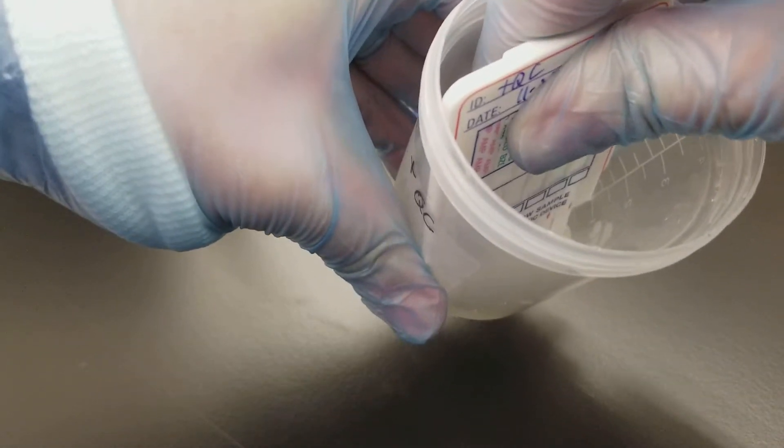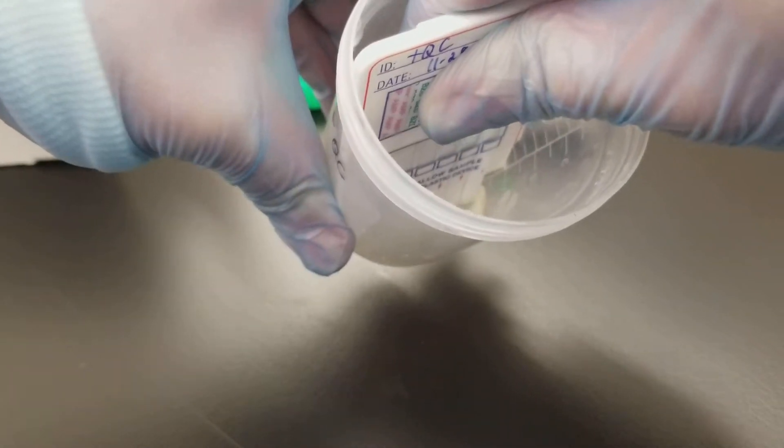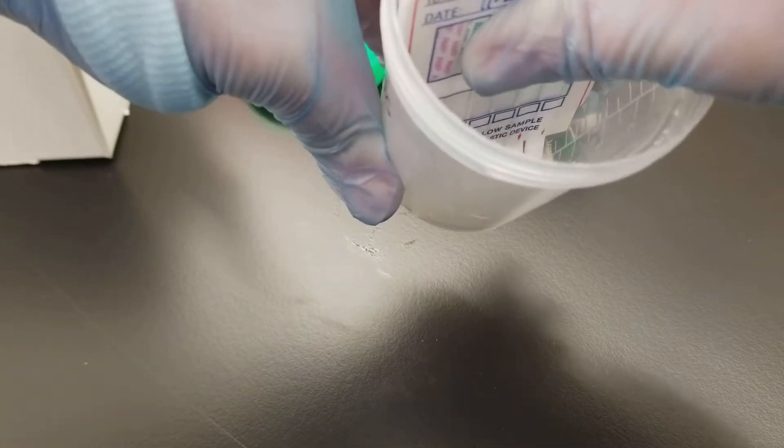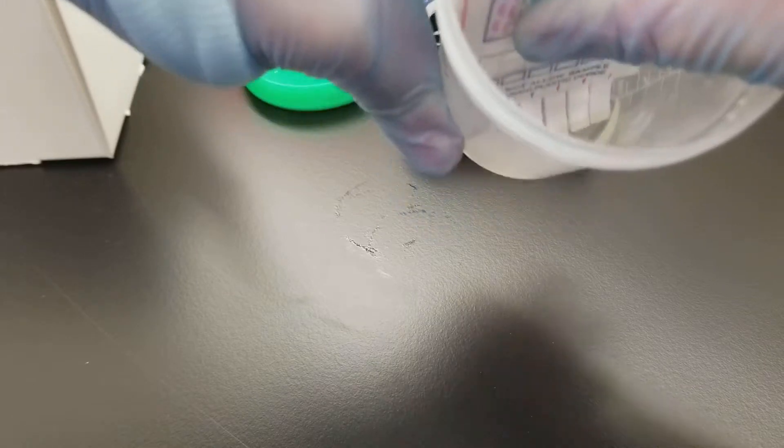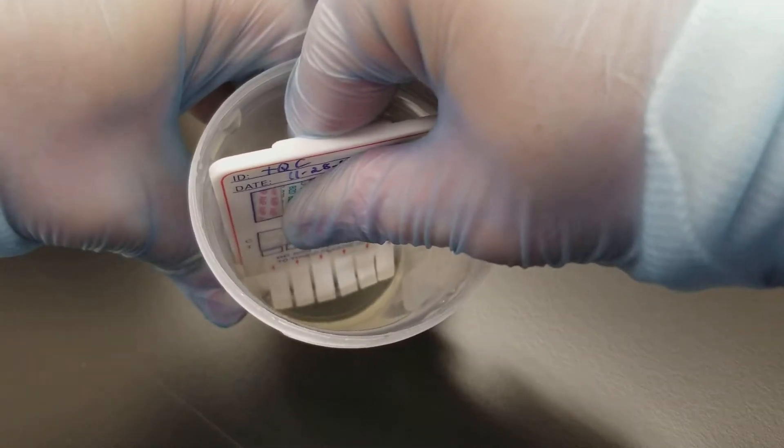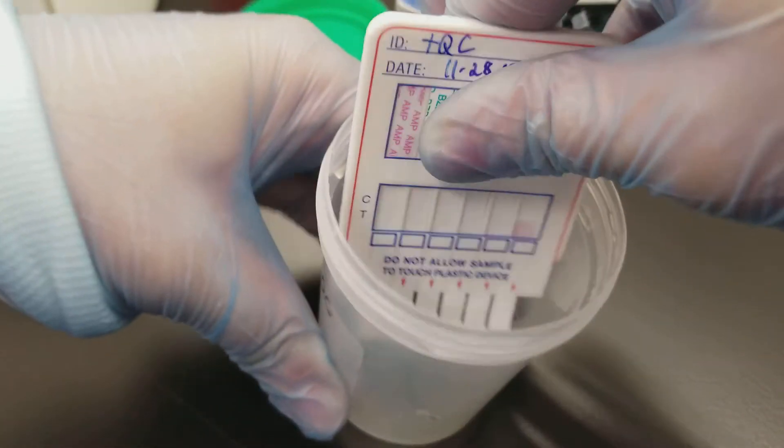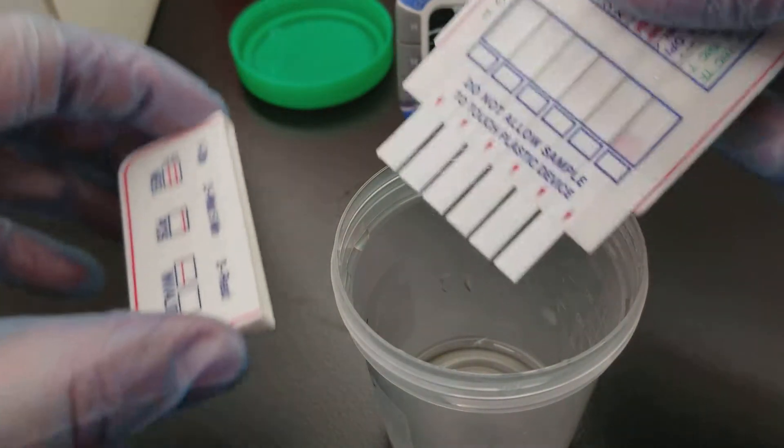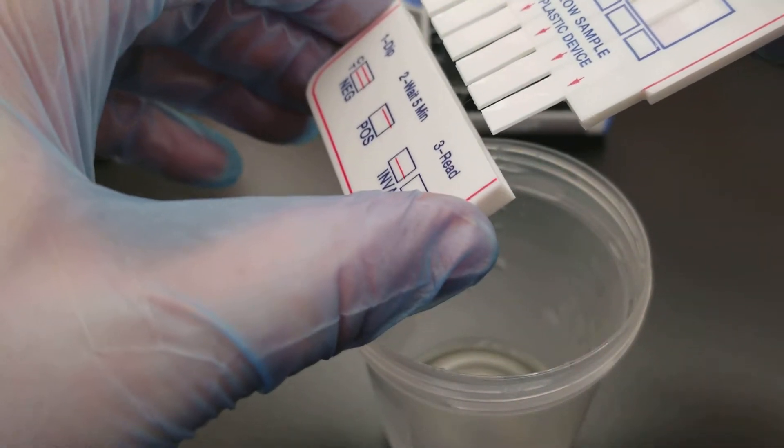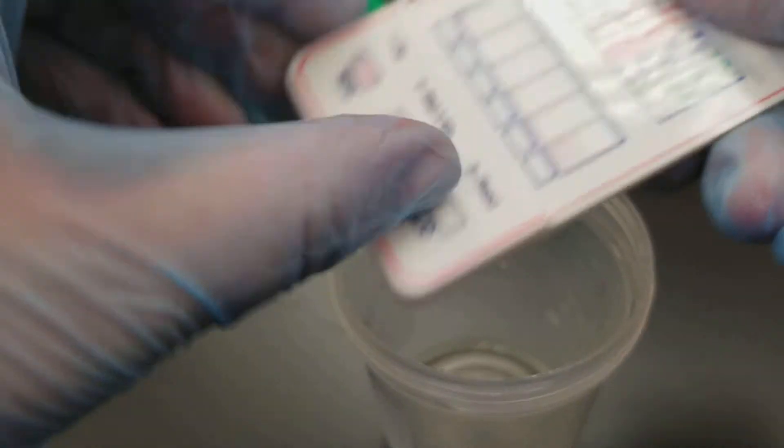Counting: one one-thousand, two one-thousand, three one-thousand, four one-thousand, five one-thousand, six one-thousand, seven one-thousand, eight one-thousand, nine one-thousand, ten one-thousand. I'm going to shake it in there just for a little extra measure. It's okay to bend them a little bit because there was hardly any urine in there. Now I'm going to cover it back up.